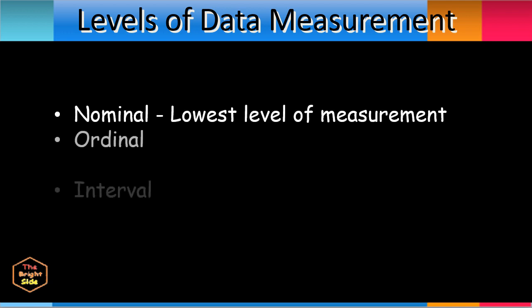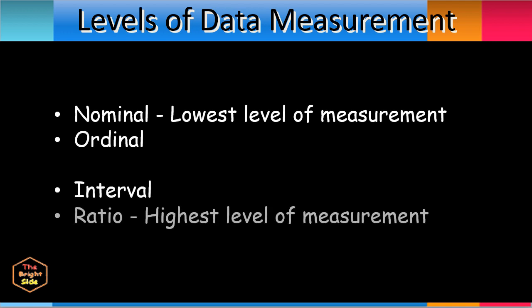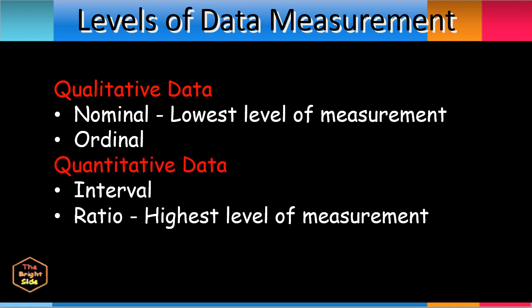The four levels of data measurement are nominal, ordinal, interval, and ratio. The first two levels, nominal and ordinal, are considered qualitative data, while the last two levels, interval and ratio, are considered quantitative data.